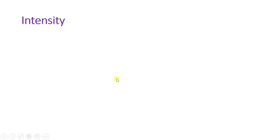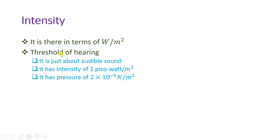Let us begin with intensity of sound. Intensity of sound is measured in terms of watts per meter square. The threshold of hearing is the just-audible sound — below that, humans cannot hear. Its intensity is one picowatt per meter square and it has a pressure of 2×10⁻⁵ Newton per meter square.